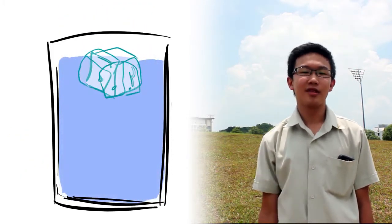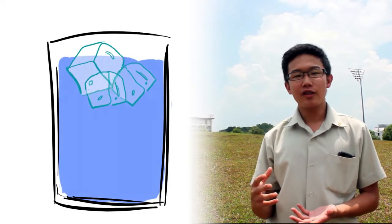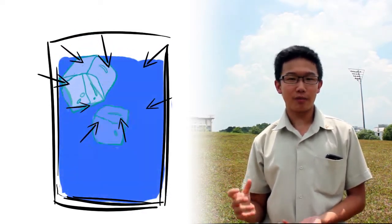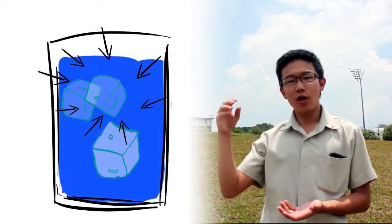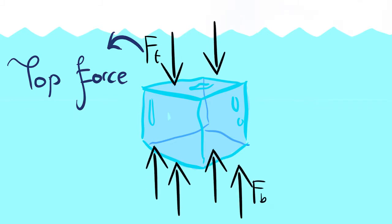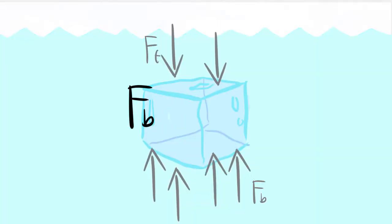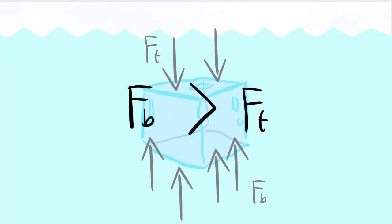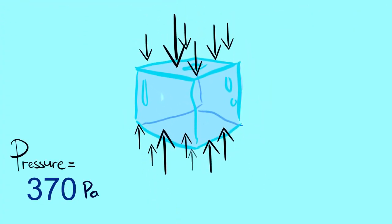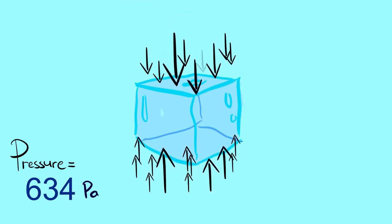For us to understand upthrust, let us consider this. Imagine an ice cube underwater. We can all agree that the faces of the ice cube will be experiencing a force due to water pressure. Now, the force acting on top of the ice cube pushing it down, compared to the force on the bottom of the ice cube pushing it up, will be far less. Hence, resulting in a greater resultant force pushing it up. This is because the deeper you are under a liquid, the greater the pressure you experience. This force will be known as upthrust.